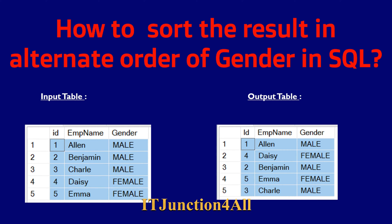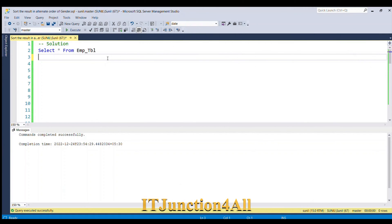For this question we have an input table called the employee table, which has columns: ID, employee name, and gender. If you look at the gender column, all records are sorted in descending order — all male records appear first and then female records. But the desired output requires the data to alternate by gender: male, female, male, female, male. Let's see how we can achieve this in SQL Server.